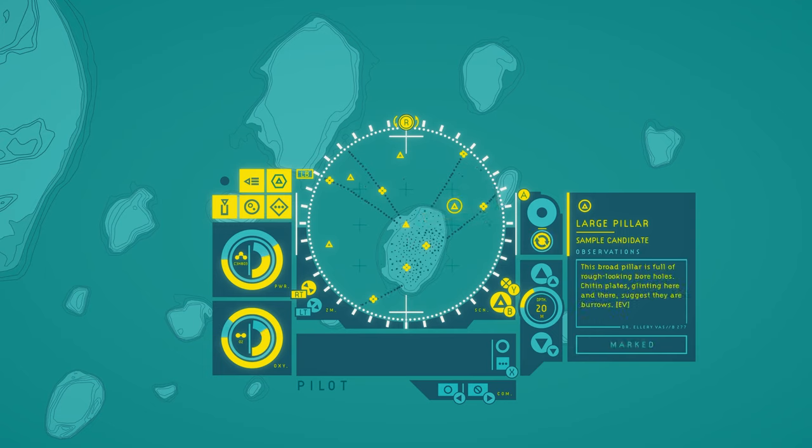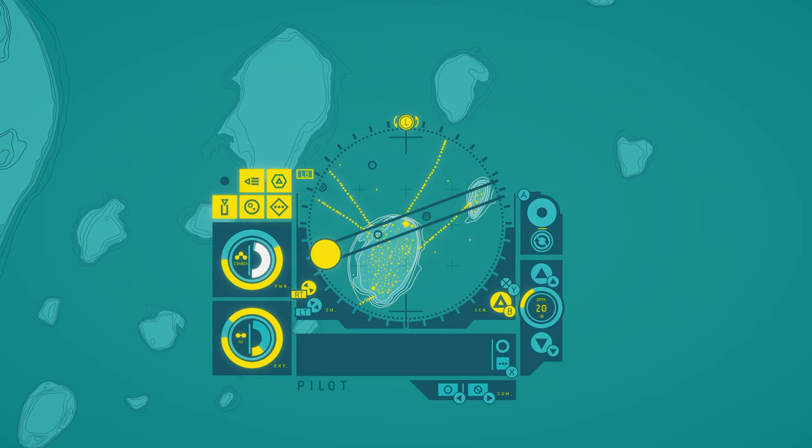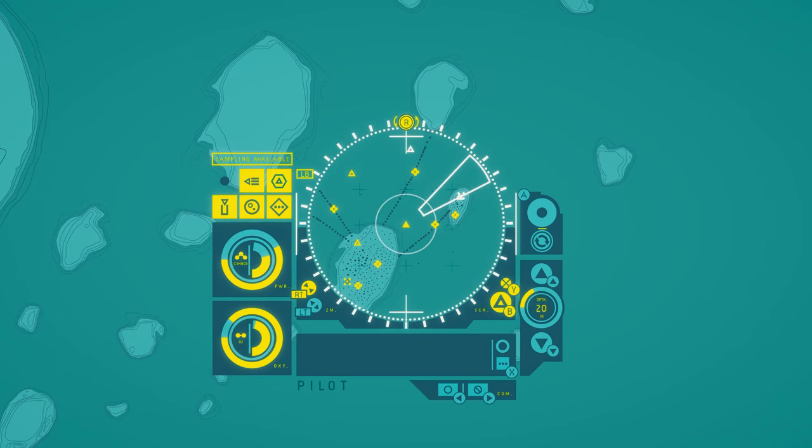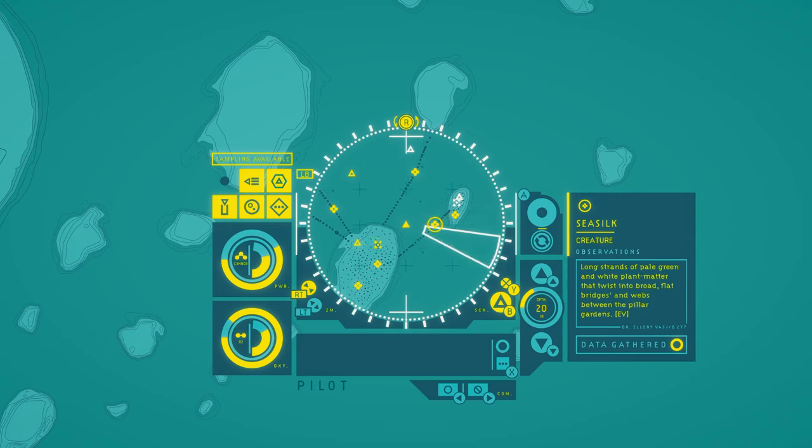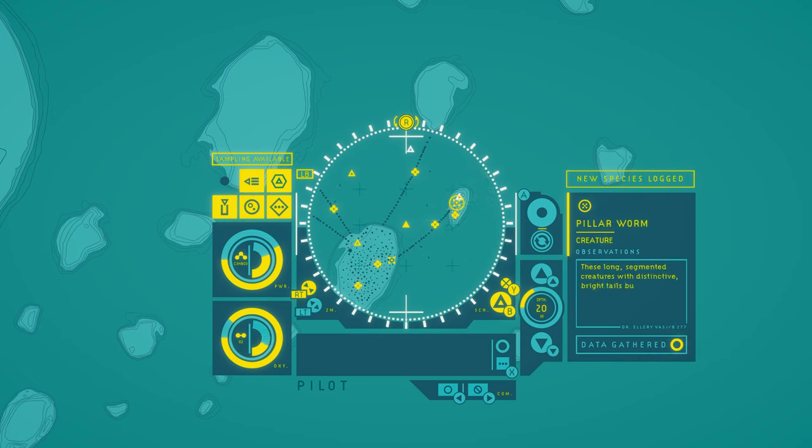A large pillar. This broad pillar is full of rough looking boreholes. Chitin plates glinting here and there suggest they're burrows. Oh no, a new one. No, not that. Pillar worm. I'll name these pillar worms. They seem to have burrows all over this place. These long segmented creatures with distinctive bright tails burrow into the hard rock of the pillars to protect themselves.